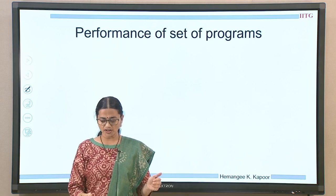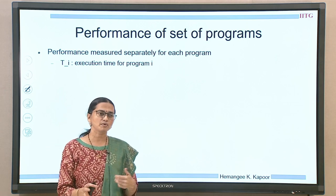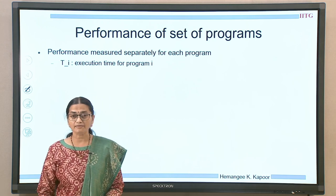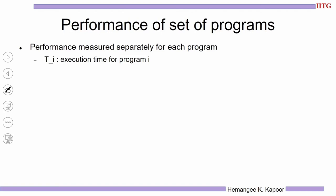The theme is how do we collate the results we get after benchmarking. Performance of a set of programs is what we are looking at. Performance is measured separately for every program — you run one program on a machine and get its execution time. Ti is the execution time for program i, and we repeat this for all programs in the benchmark suite P1, P2, P3 up to Pm. Once we get this, how do we report performance when we have different execution times for different programs? How do we collate these results to give one final answer?